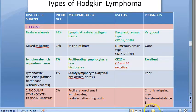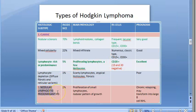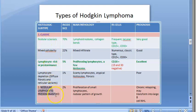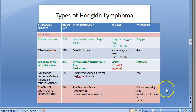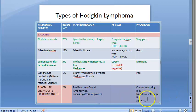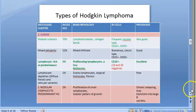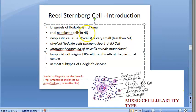There is one additional type: nodular lymphocyte predominant Hodgkin lymphoma. Under classic types there is lymphocyte predominant, and separately there is also a nodular form. Just know that there is a nodular growth pattern with lymphocyte rich or lymphocyte predominant features.